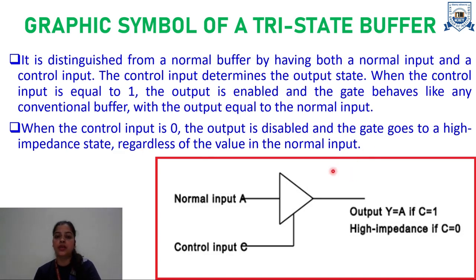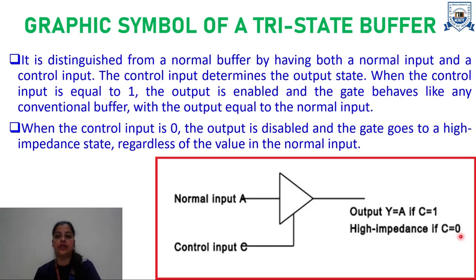You can notice this description in this image. Here we have the normal input, which is A, and the control input C. The output, which is designated as Y, would be equal to A if the value of the control input is 1, and if the value of the control input is 0, this will act as a high-impedance state.